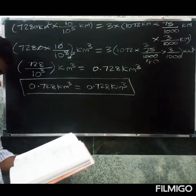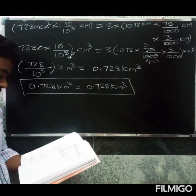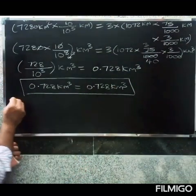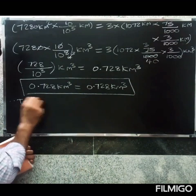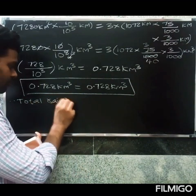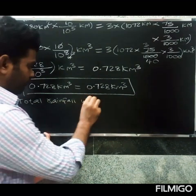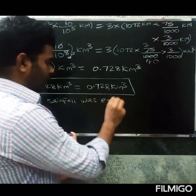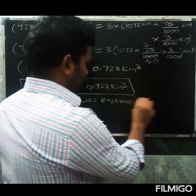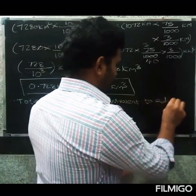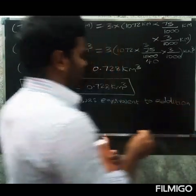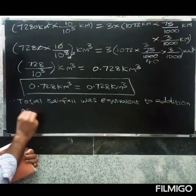Therefore, we have shown that the total rainfall was equivalent to the addition of the normal water of 3 rivers.